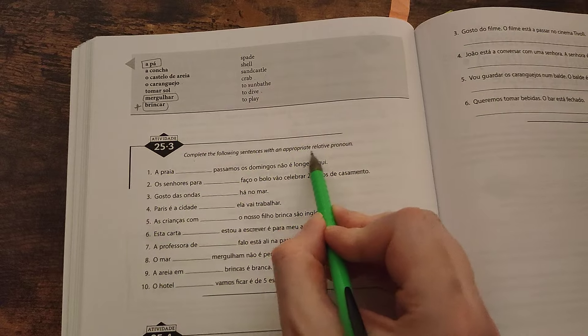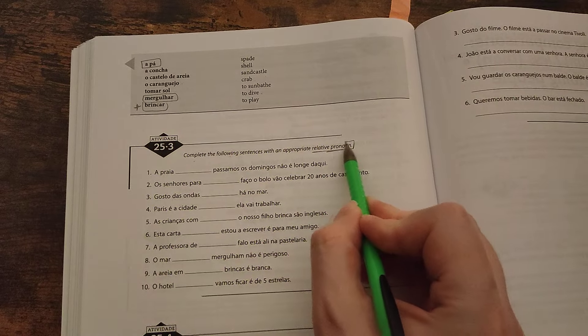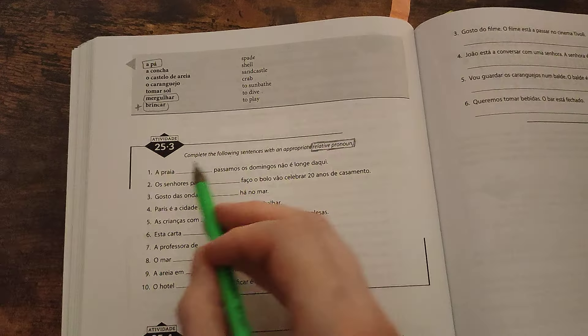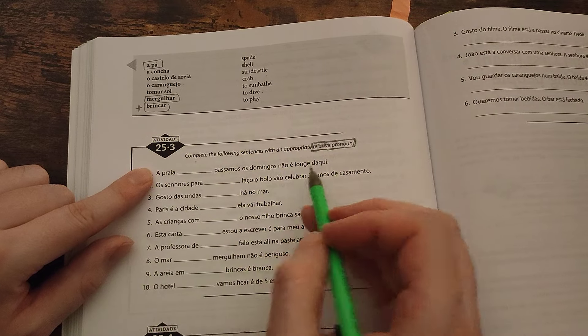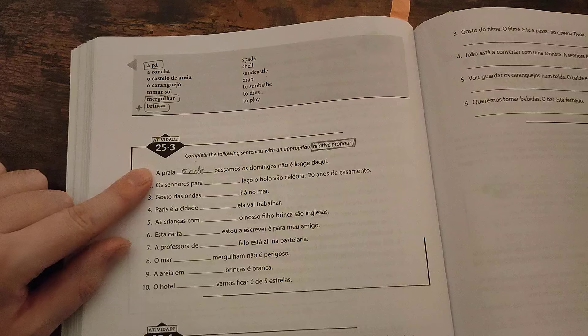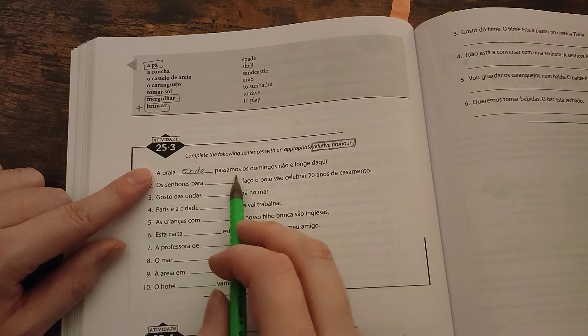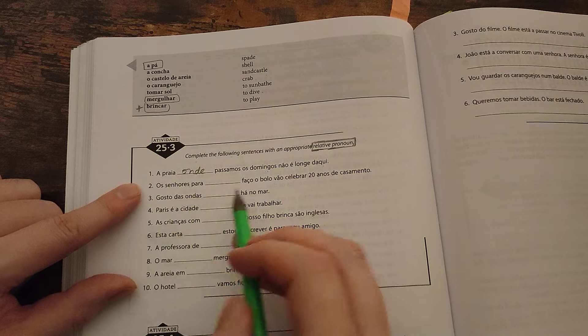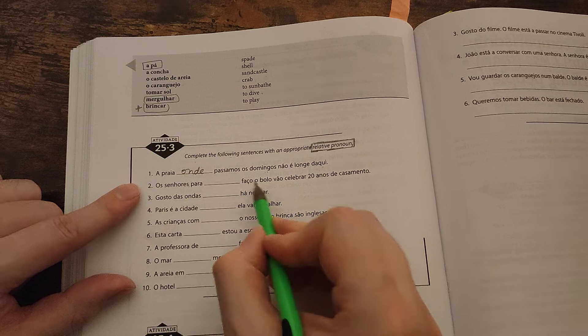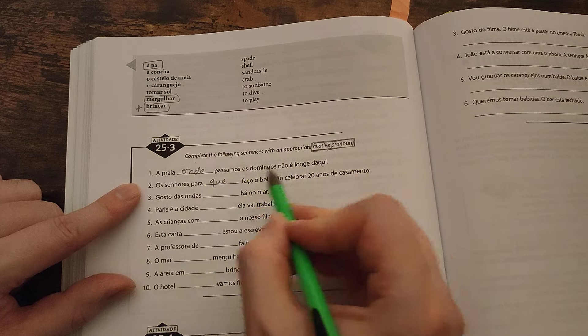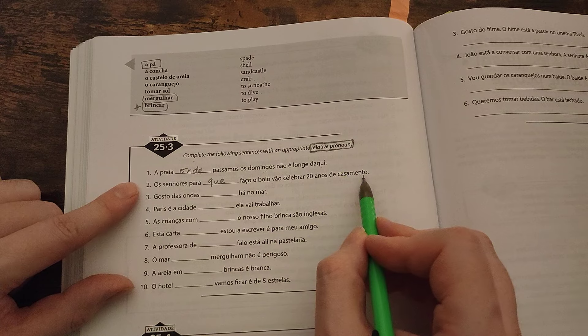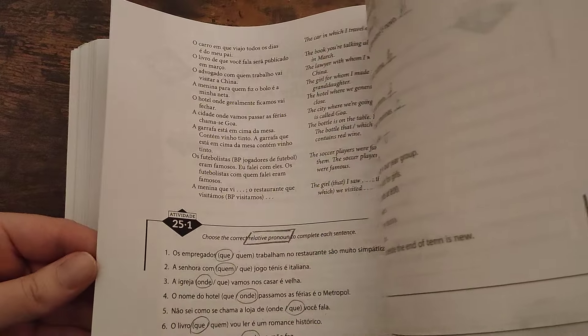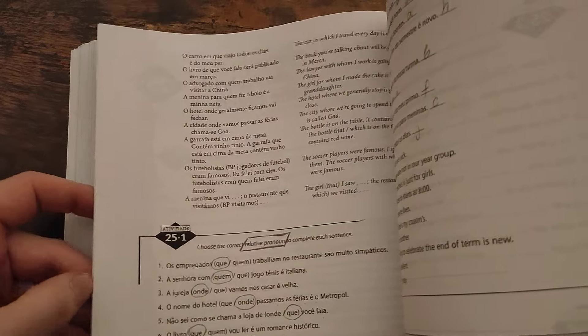Complete the following sentences with an appropriate relative pronoun. A praia onde passamos os domingos não é longe está aqui. The beach where we spend our Sundays isn't far from here. Os senhores para quem faço o bolo vão celebrar vinte anos de casamento. Bolo, how do I translate bolo? Party. Cake.